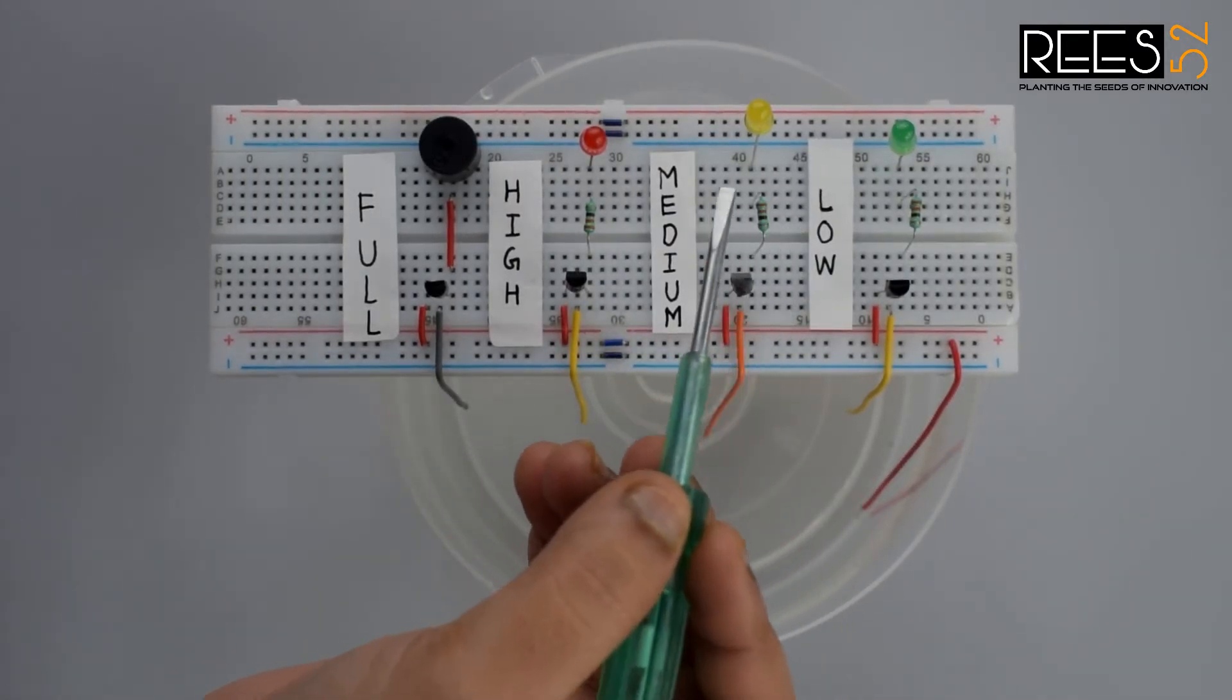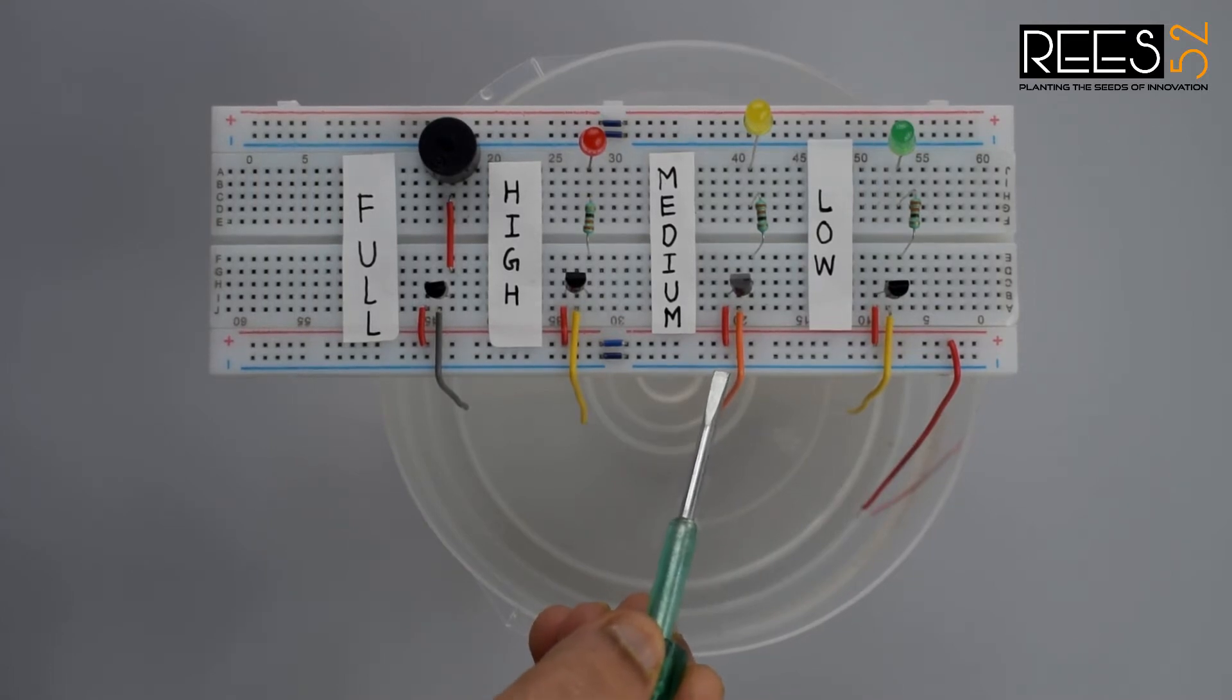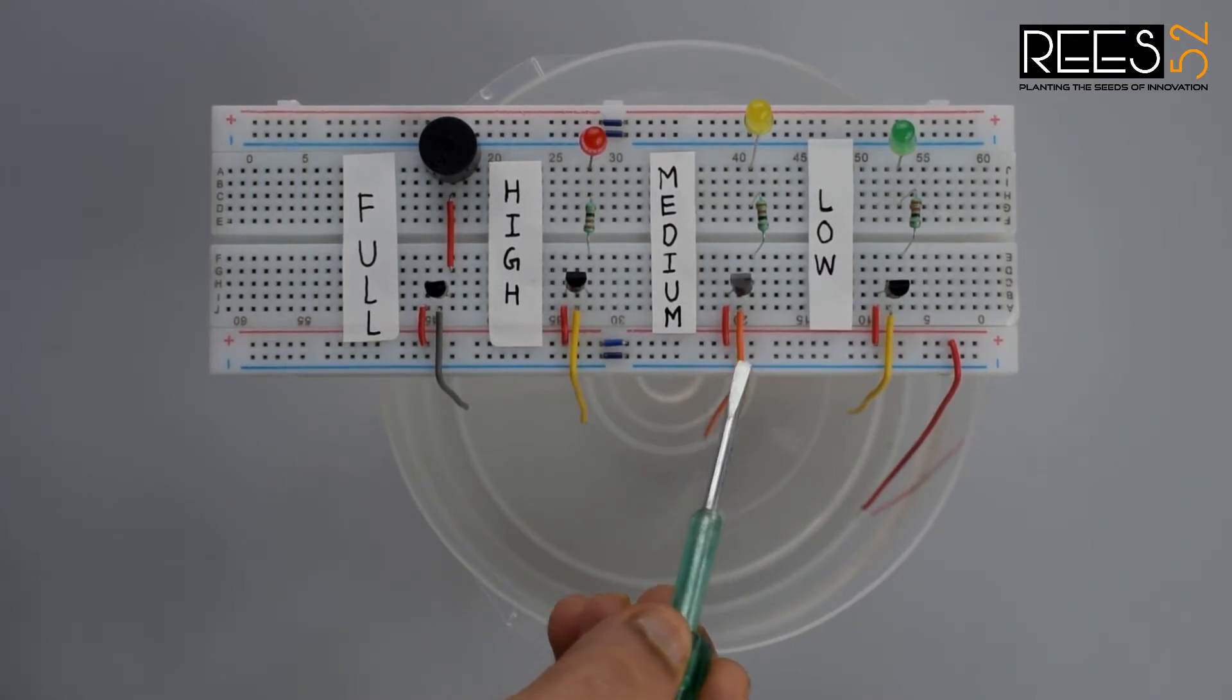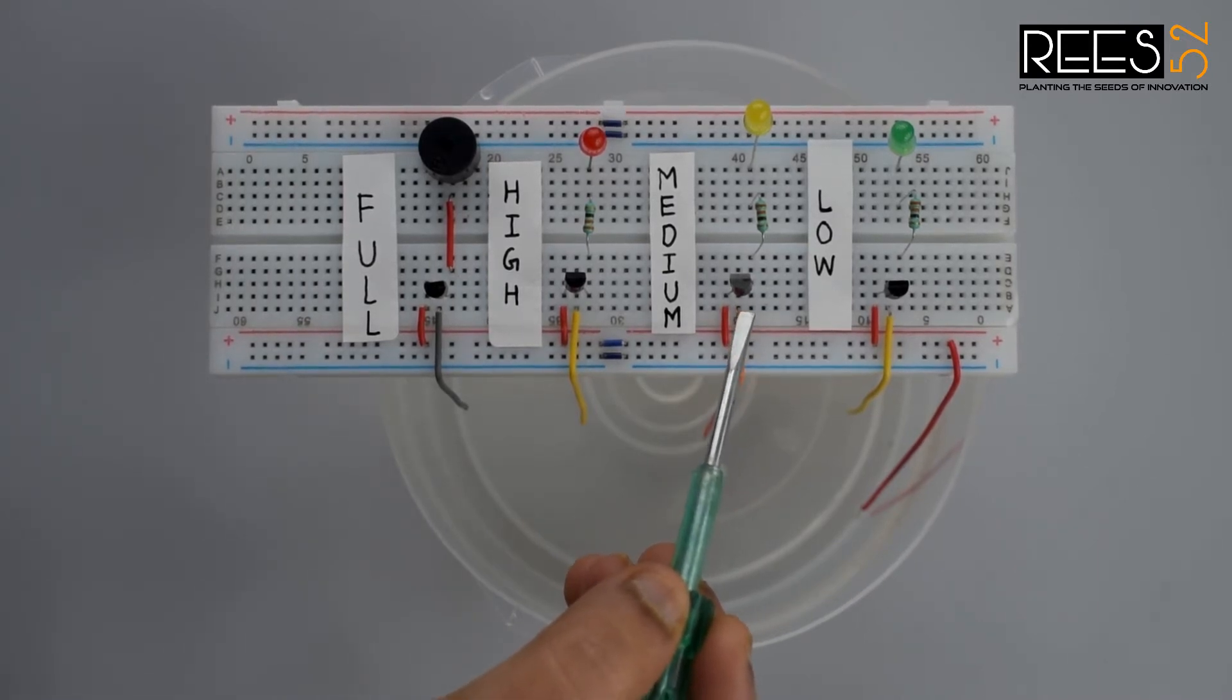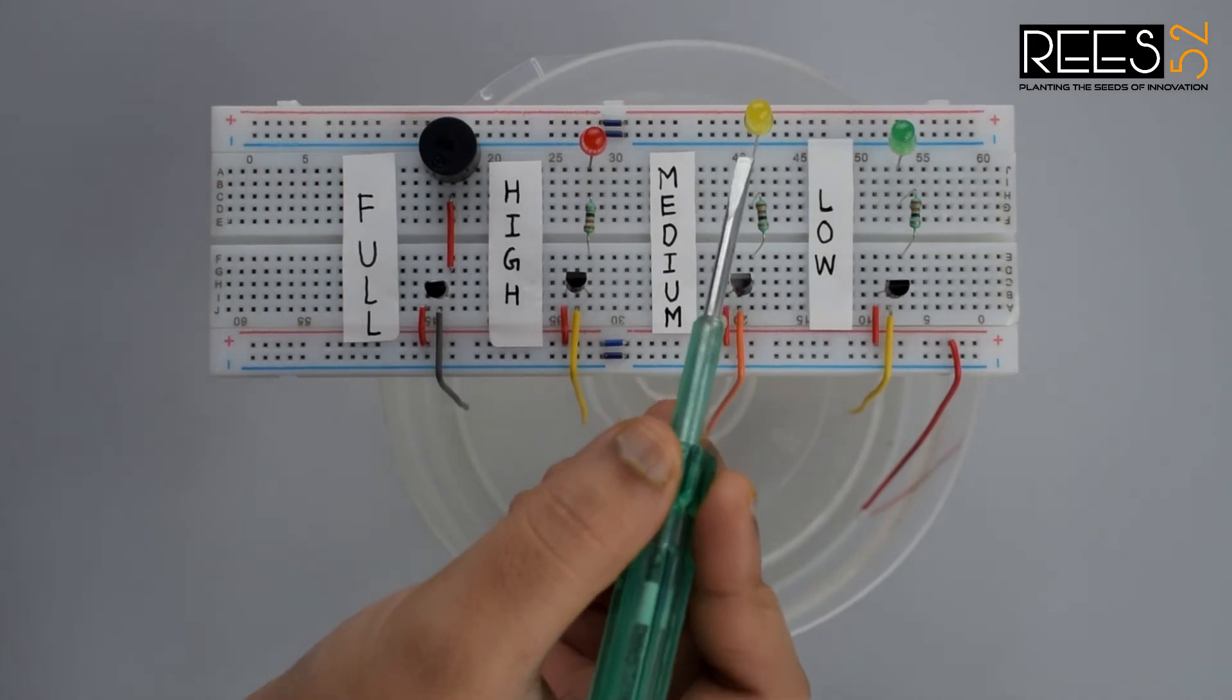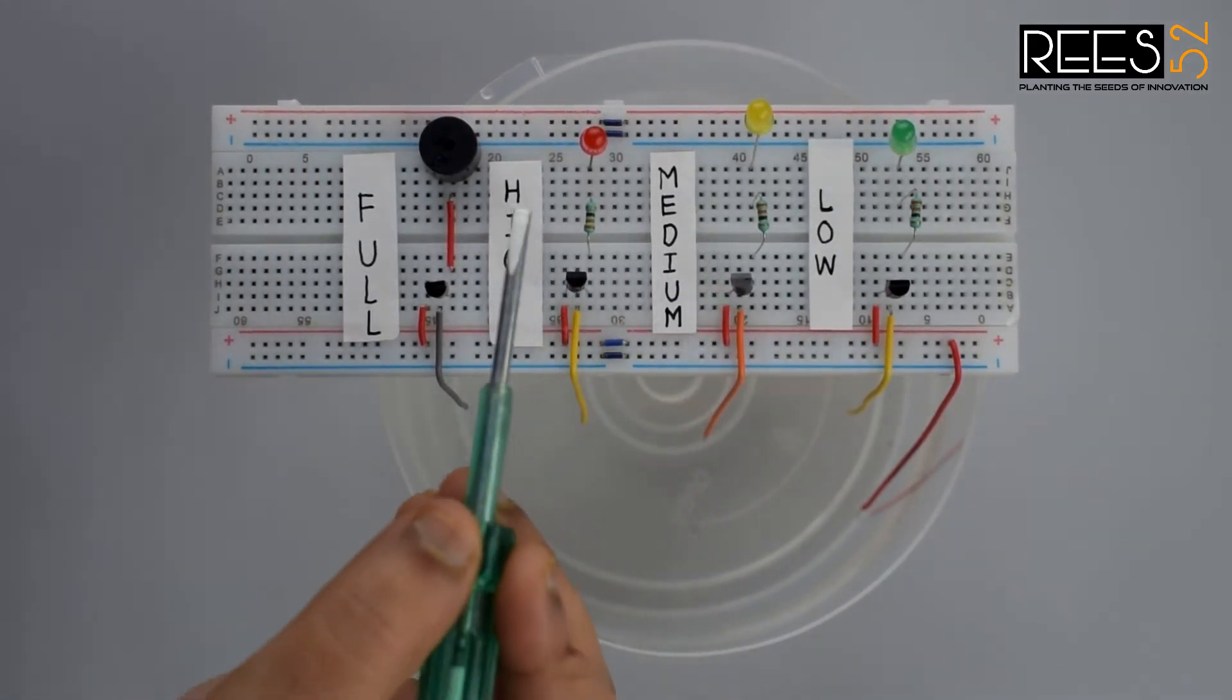which will detect the water level. This simple transistor-based water level indicator circuit is very useful to indicate the water levels in a tank. Whenever tanks get filled we get alerts on particular level. Here we will create full level that is low, medium, high and full. We can create alarms for more levels. We will add three LEDs.